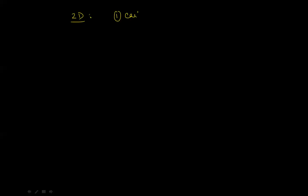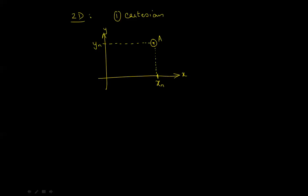For 2D, things start to get a little more interesting. There are two ways to demonstrate position and motion in 2D. The first one is the Cartesian system. If I draw a plane — which is what 2D position motion is in — there's your x and y dimensions. Suppose there lies an object A at this point. If I were to project this point on the x-axis, I would get the x-coordinate, let's say xn. And if I were to project the point on the y-axis, I would get the y-coordinate of the object. You would say the position of A is at xn and yn, and that is the simplest way in 2D to state the position and motion of an object.